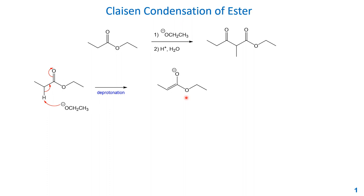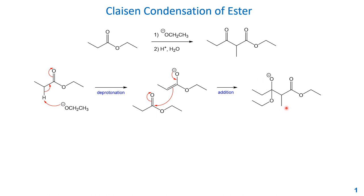The enolate is a good nucleophile and will react with another molecule of the starting material, the ester. The electron from the oxygen pushes back from the pi bond, and the pi electron attacks this carbonyl carbon, pushing the pi electron to the oxygen. This nucleophilic addition gives you an intermediate with a negative charge on the oxygen. This oxide then pushes back from the pi bond again and kicks off the ethoxide as the leaving group, which regenerates the catalyst. This last step is elimination, forming the beta-ketoester.